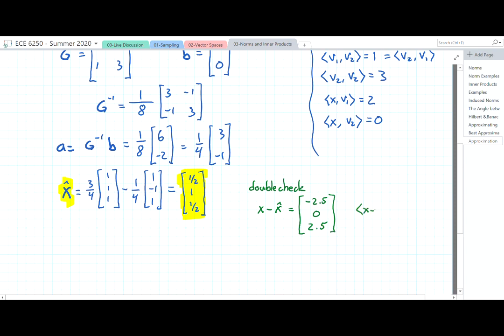And this needs to be orthogonal to x̂. Is it? Yes. So we have -2.5 times 1/2 plus 2.5 times 1/2, and that is indeed equal to 0. And we have the minimizing point here.